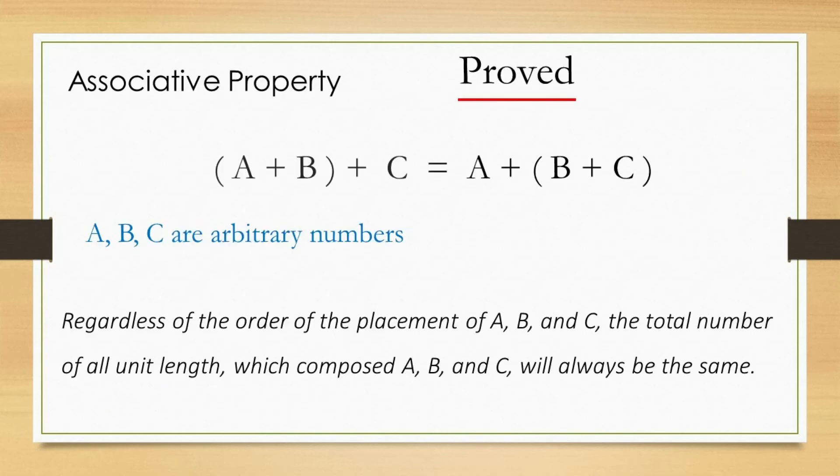Summary. From the discussion above, it can be understood that the associative property in addition is proved for arbitrary numbers or any numbers.